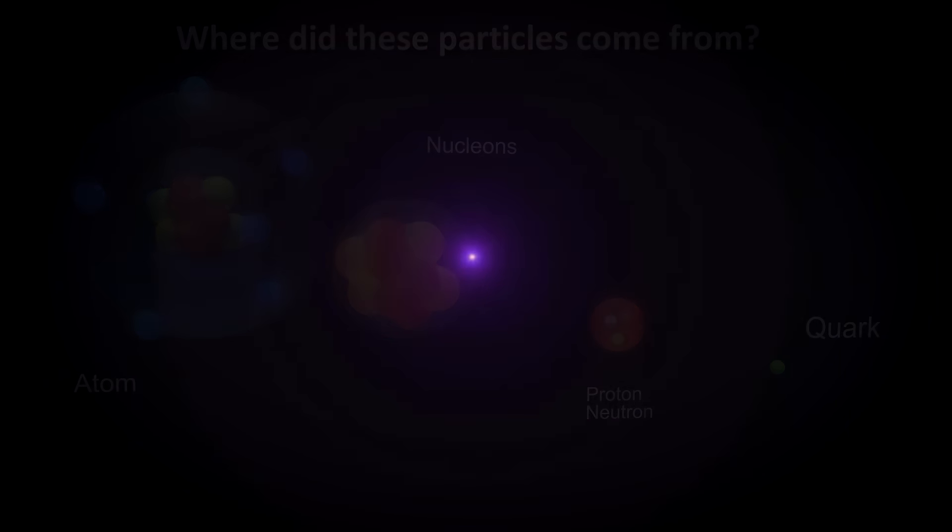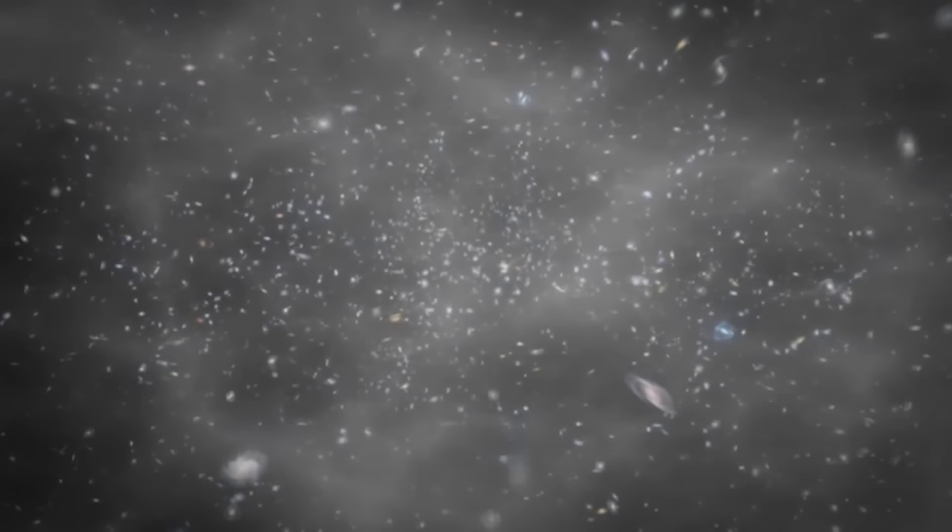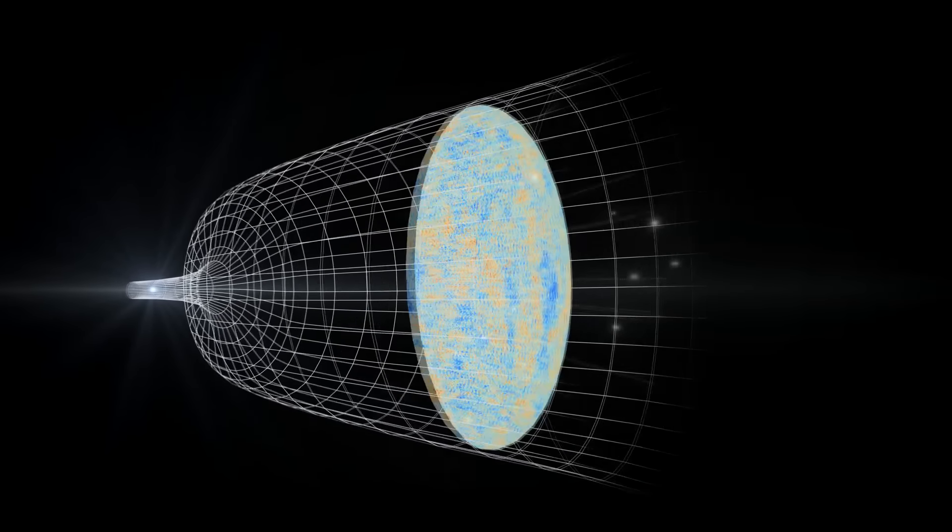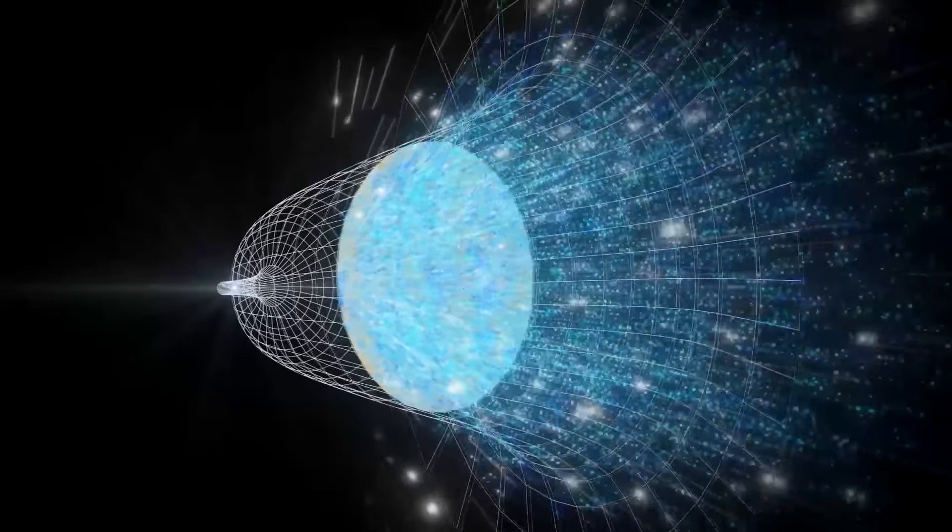The short answer is the Big Bang. In the early universe, there was an immense amount of energy. Yada yada yada, the energy condensed, atoms formed. But as you might suspect, there's a lot that happened in the yada yada yada step. So what really happened? What is the Big Bang really, in a scientific sense? The answer, which might surprise you, is coming up right now.